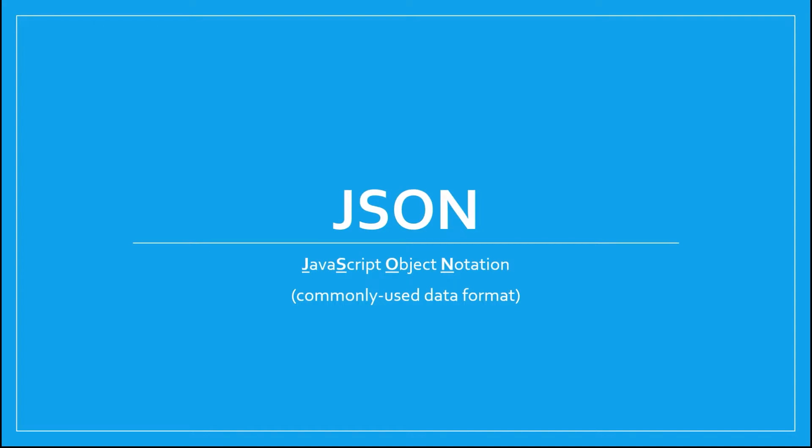This is a short training video on the JSON data format. JSON stands for JavaScript Object Notation and is a set of rules or syntax on how to format data in text for exchange via some communication protocol.